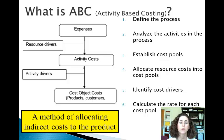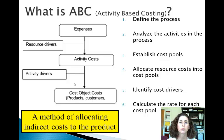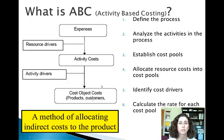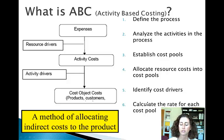Then we calculate a rate for each cost pool. I take the total overhead cost related to baking, divide it by the total machine hours — this is a projection for both costs and activity levels, just like in traditional product costing — and that gives me a rate per hour. For frosting, I take the total overhead cost associated with frosting and divide it by the total direct labor hours needed to complete the frosting for the quarter. That's how I apply the baking overhead and frosting overhead to the product.